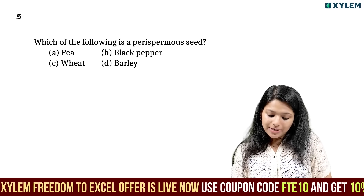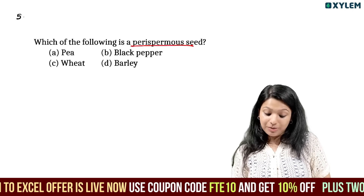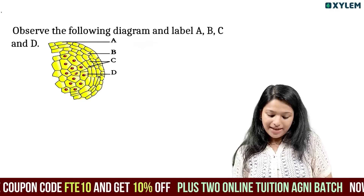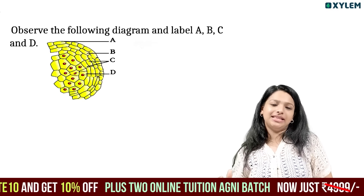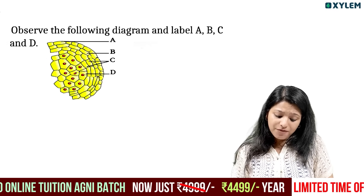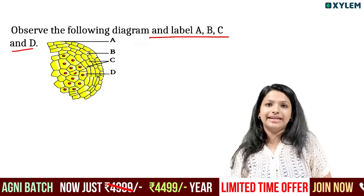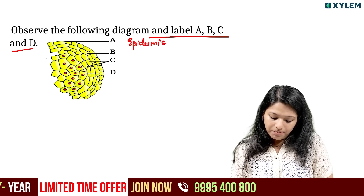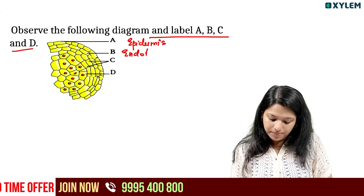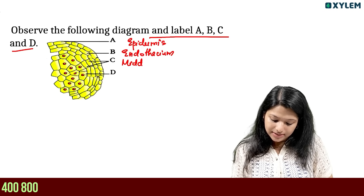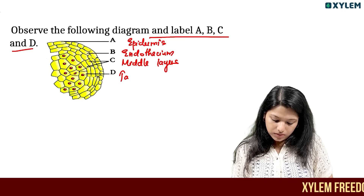Which of the following is a perisperm seed? A perisperm seed example is black pepper. This is a practical and theory exam topic. Observe the following diagram and label A, B, C, and D. In the microsporangium wall, the epidermis, endothecium, middle layers, and tapetum are the layers from outside to inside.